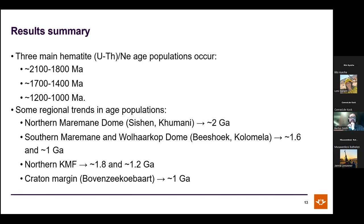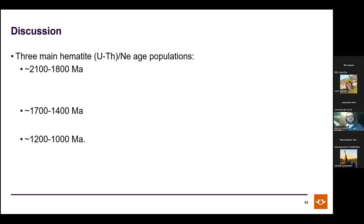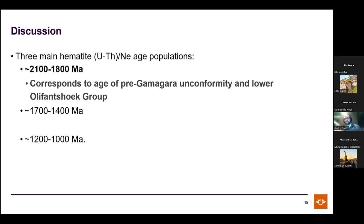In the northern Kalahari manganese field, both the very old and very young ages are represented. At Bovensiakribar, a clear ~1 billion year age gives a perfect bull's eye linked to the Namaqua orogeny. The older 2 billion year age is related to supergene enrichment along the pre-Kamahara unconformity.